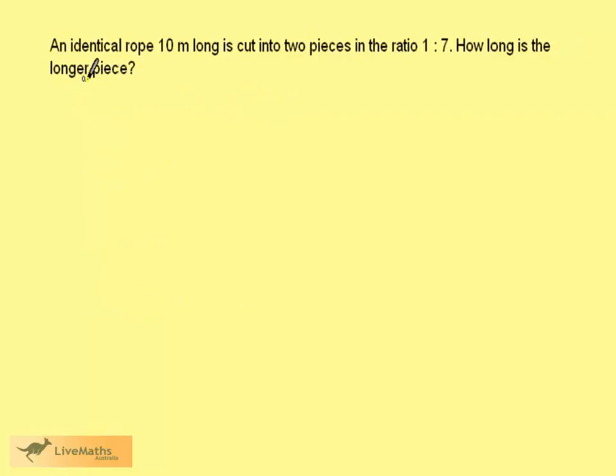An identical rope 10 metres long is cut into two pieces in the ratio 1 to 7. How long is the longer piece?